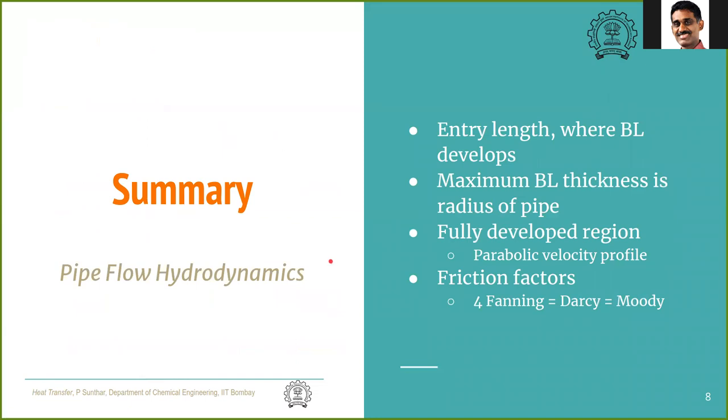To summarize pipe flow hydrodynamics, we saw that there is something called as an entry length, where the boundary layer develops from zero to a maximum value. The maximum value in the case of pipe flow is simply the radius of the pipe. It cannot grow more than that. Then in the fully developed region, the velocity profile is parabolic. And we also saw that there are several friction factors commonly used. The Fanning friction factor, Darcy and Moody. Four times Fanning friction factor is either Darcy or Moody. Thank you.